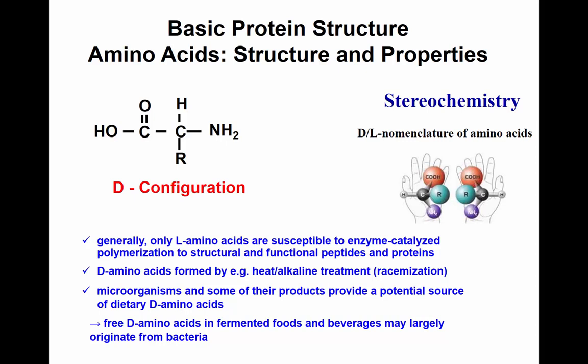In nature we have L configuration, where the amine group is on the left. However, you can find D configuration, which is mostly due to bacterial fermentation, or if you have heat and alkali treatment. Sometimes you get D amino acids as well, where the amine group is on the right. We call this racemization — you would have a mixture of L and D configuration.